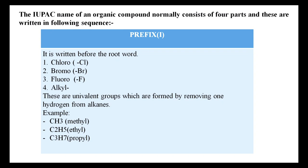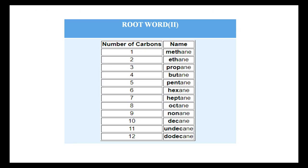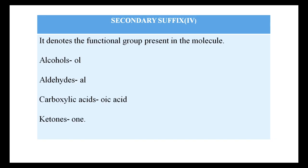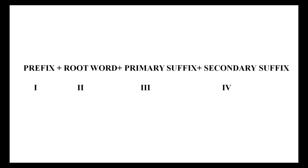The second part is the root word — the number of carbons in the main chain: one is meth, two is eth, three is prop, and so on. The third part is the primary suffix, indicating the type of bond between carbons: 'an' for single bond, 'en' for double bond, 'yn' for triple bond. The fourth part is the secondary suffix, related to functional groups: 'ol' for alcohols, 'al' for aldehydes, 'oic acid' for carboxylic acids, and 'one' for ketones.